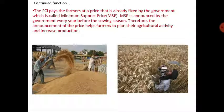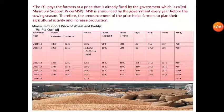Every year, before the sowing season, FCI announces the various Minimum Support Prices for every season. MSP is a price already fixed by the government — it supports farmers' agricultural activity planning and helps increase production. Minimum support price is nothing but a price that is already fixed by the government to protect farmers.